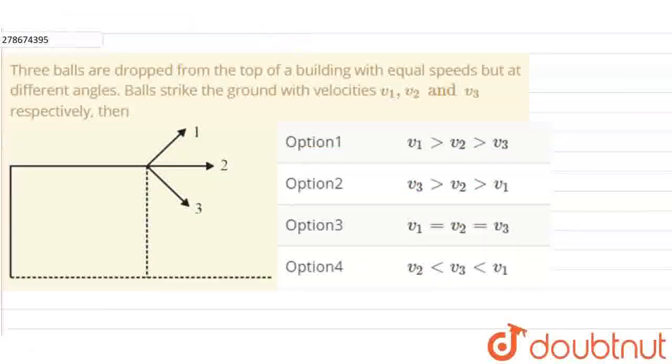Hello everyone, our question is: 3 balls are dropped from the top of a building with equal speeds but at different angles. Balls strike the ground with velocities v1, v2, v3 respectively. We have to choose the correct option.